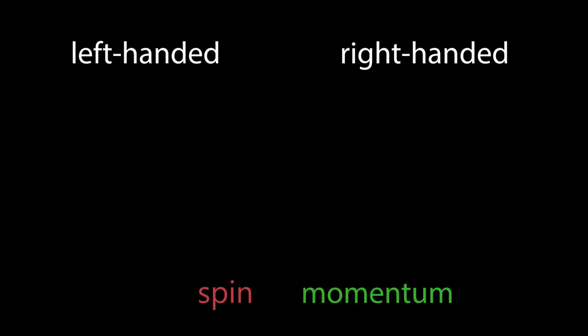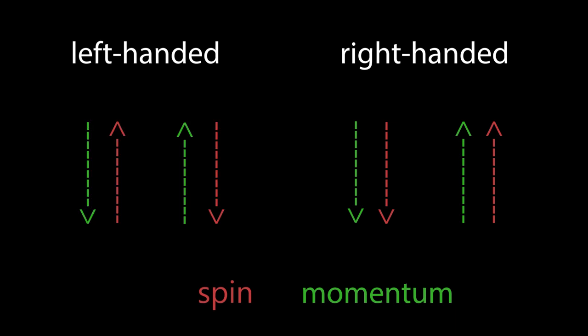If spin and momentum tend to point in the same direction, both up or both down, then the particle is considered right-handed, and if they tend to point in opposite directions, then it's left-handed.